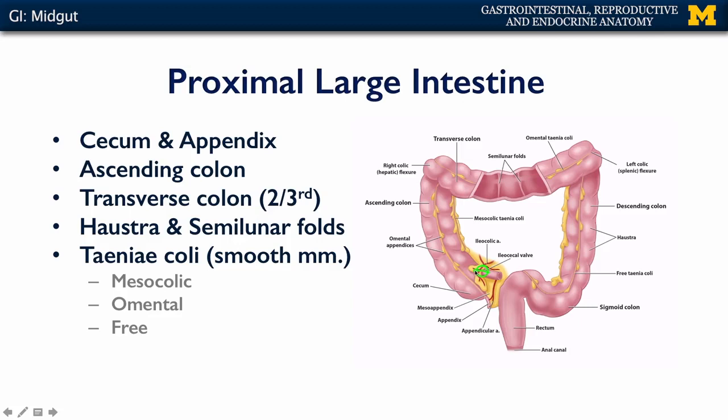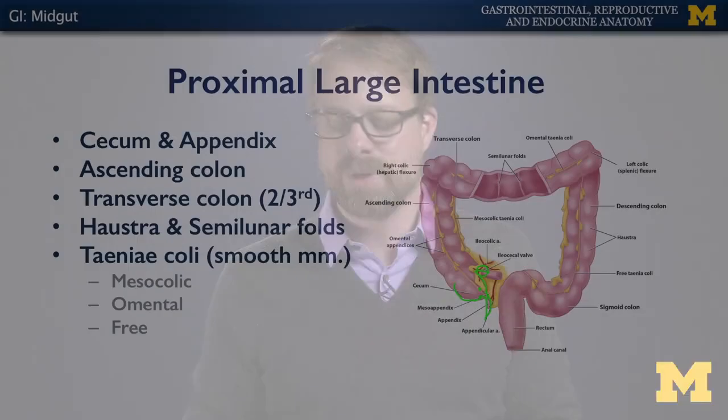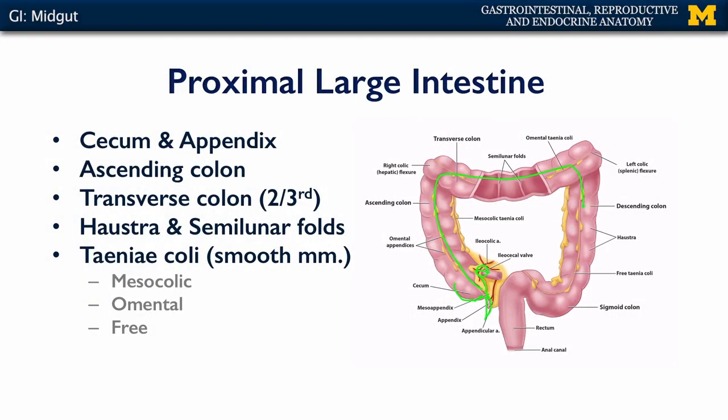The proximal large intestine has a couple of notable parts. We have the cecum, which is the blind alley, and associated with it is the vermiform appendix. It's often thought to be a vestigial or functionless structure, but we now understand that the appendix is an important part of maintaining the microbiota. Many beneficial and commensal bacteria inhabit the appendix, and during intense periods of diarrhea that would flush the microbiota from the intestines, they have a refuge there.